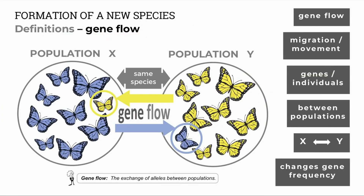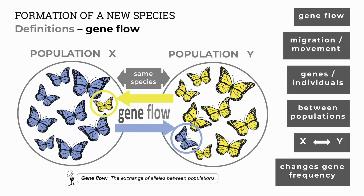Gene flow refers to the exchange of alleles between populations. So if a yellow butterfly moves from population Y to population X, its yellow alleles or genes join the gene pool of population X. A blue butterfly moving from population X to Y brings its blue alleles into the gene pool. Gene flow involves the migration or movement of genes in individuals between populations, which increases gene frequency in these populations.